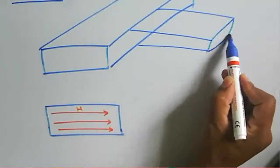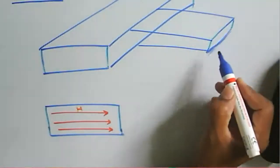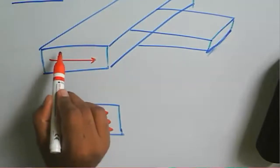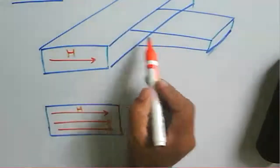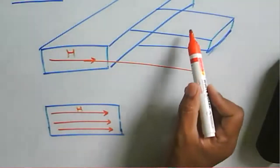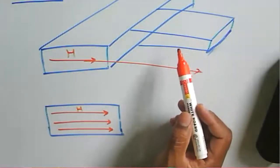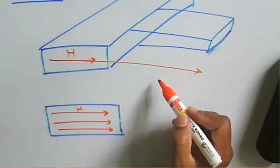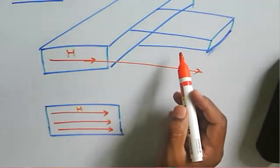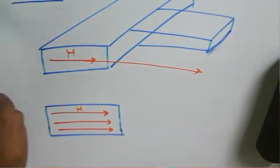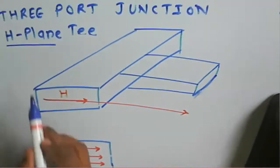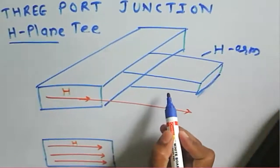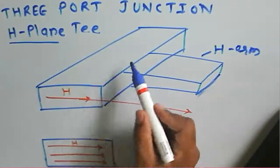The arm is parallel to the H-field component. This arm is present in the H-plane T, so it is called the H-arm. The waveguide structure is called the H-plane T. This H-arm is called the side arm for this rectangular waveguide.